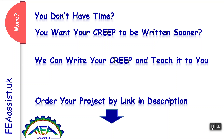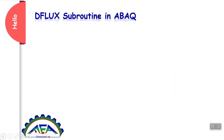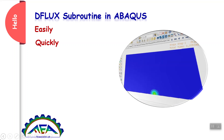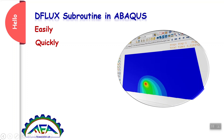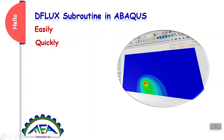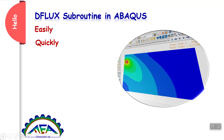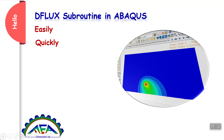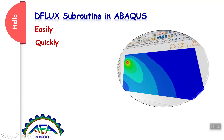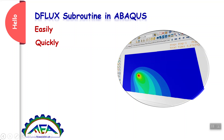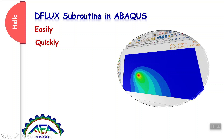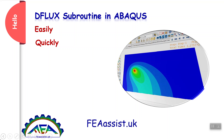Hello, you want to learn DFLUX subroutine in Abacus easily and quickly. DFLUX is a subroutine to define heat flux in heat transfer problems and mass flux in mass diffusion problems. In other words, if you want to have a movable heat source like a laser, or a movable object in your problems like carbon atom diffusion, you need to define a DFLUX problem. Stay with us.